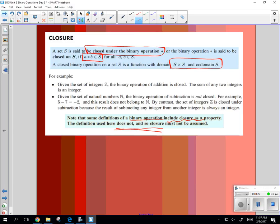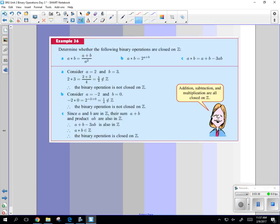So for example, given the set of integers Z, binary operation is closed under the integers. The idea there is your answer is an integer.